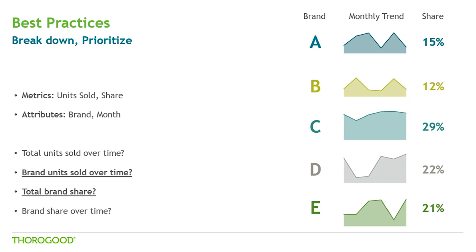In the second scenario, we chose to show the trend of units sold over time by each individual brand and the total brand share over the whole six-month period. We created simple area charts where you can quickly see the trends and variations, and also added a total percentage share for the six months on the right side. What catches my attention first is that brand C has the highest overall sales, and there's that big dip in brand D for months two and three.